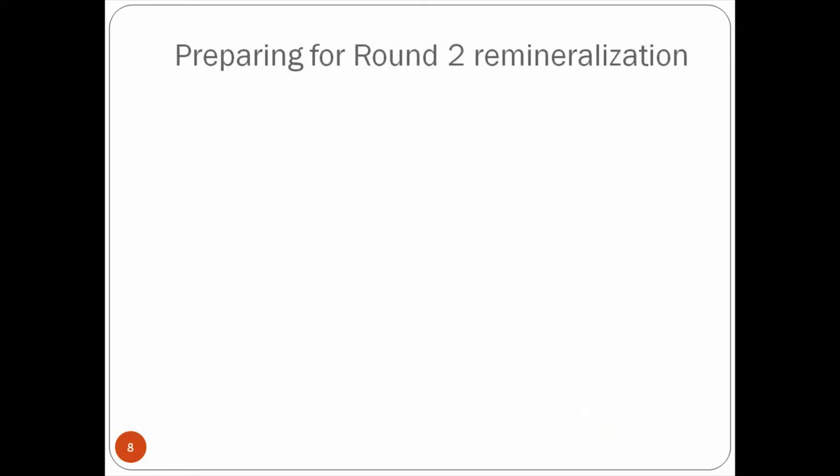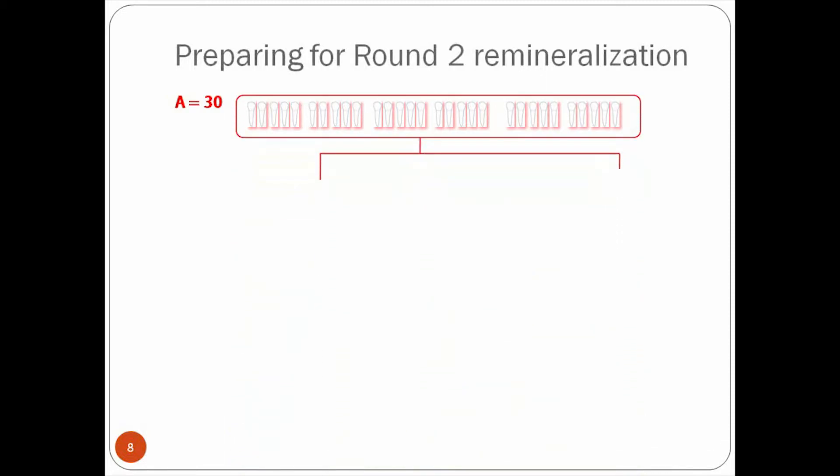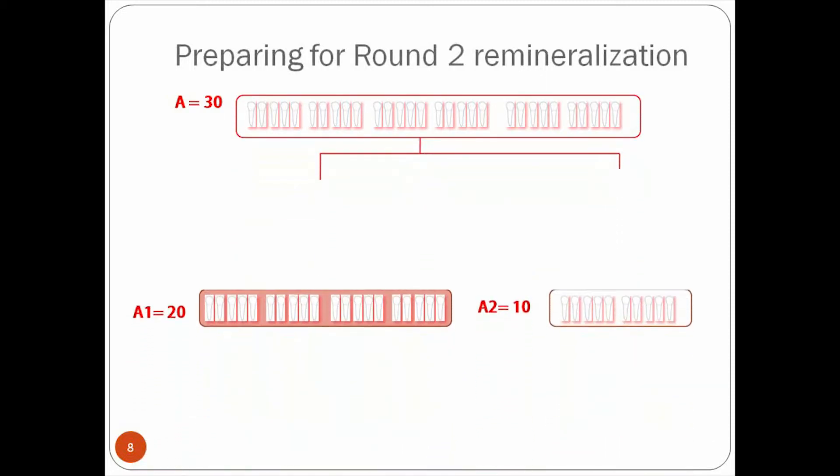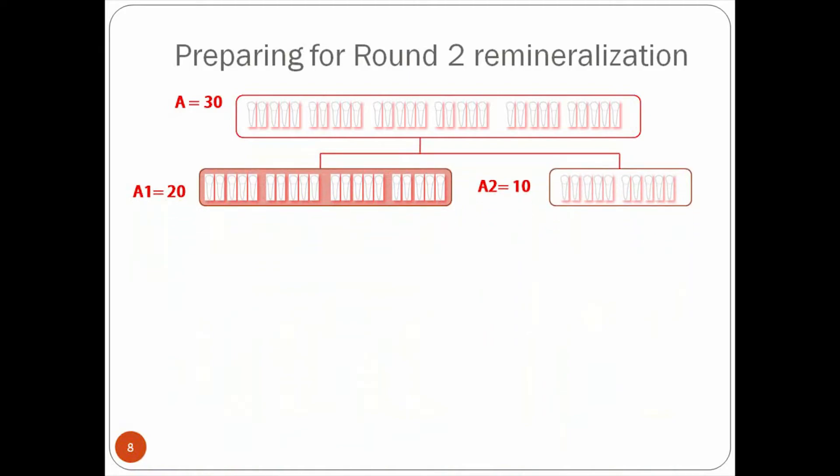Slide 8. Now we're preparing for round two of remineralization. What does that mean? So they took one of the groups, let's say group A, and they divided it into two parts. Subgroup A1, which has 20. Subgroup A2, that has 10. For group A, they did acid etching. For group A1, they did acid etching. And for group A2, they didn't do anything.